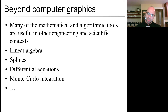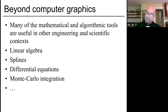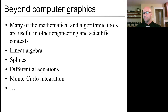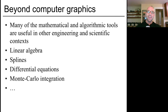We'll also cover some new mathematical concepts including homogeneous coordinates, solving ordinary differential equations both numerically and a tiny bit by hand, and a tiny bit of Fourier analysis when we talk about anti-aliasing and sampling. One of the fun things to note is that many of the mathematical and algorithmic tools we'll cover are useful in other disciplines — linear algebra is all over the place, splines are used in data analysis and interpolation, Monte Carlo integration is used in Bayesian machine learning. We'll also talk about animation and how it connects to robotics.